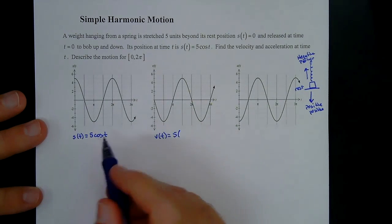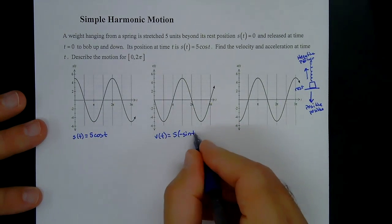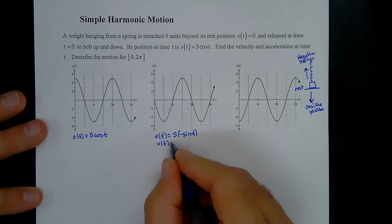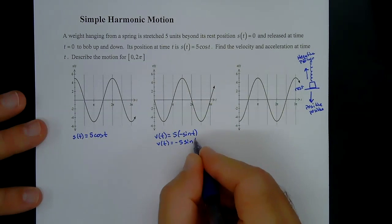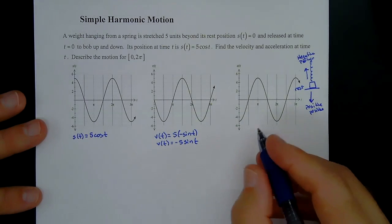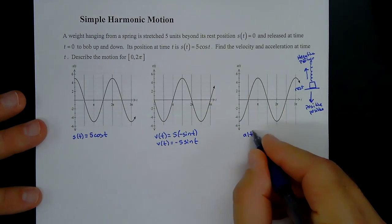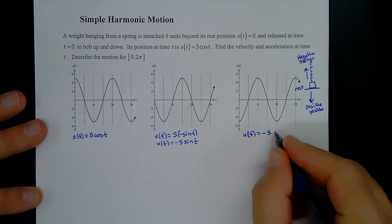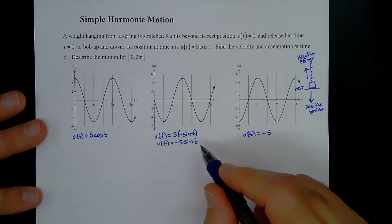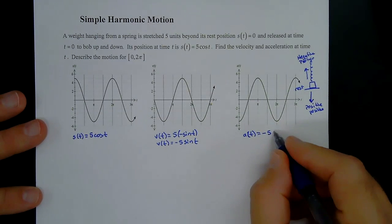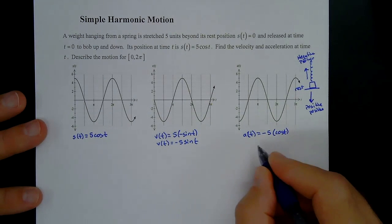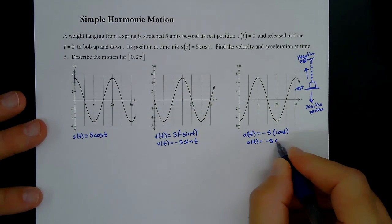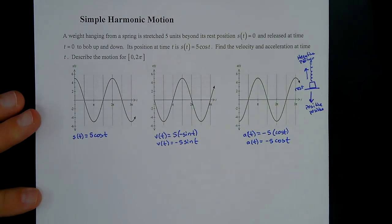The derivative of cosine is negative sine of t, so v(t) = −5sin(t). Then the acceleration a(t) equals the derivative of velocity, which is −5 times the derivative of sin(t), giving cos(t). So a(t) = −5cos(t).